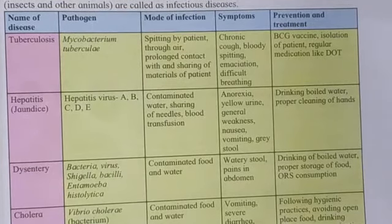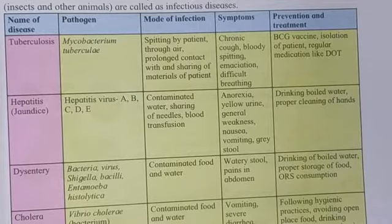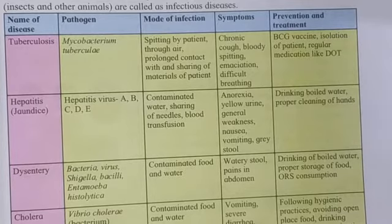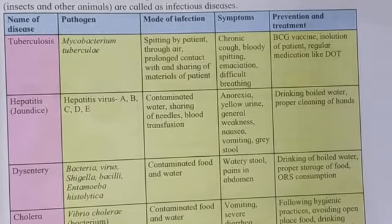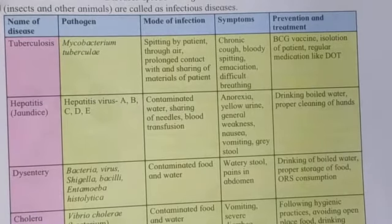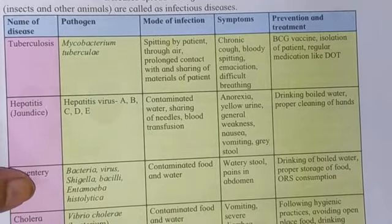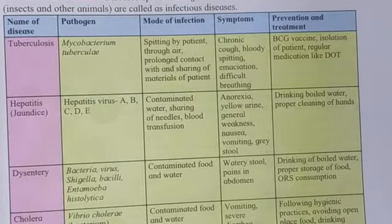Now in your textbook you have a chart of the infectious diseases. Infectious diseases are diseases that spread through contaminated air, water, food, or vectors like insects and other animals. Now let us see what the infectious diseases are. The names of the infectious diseases we will cover are: tuberculosis, hepatitis, dysentery, cholera, and typhoid.